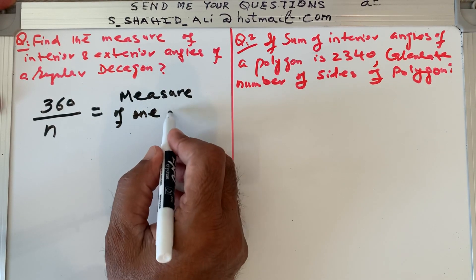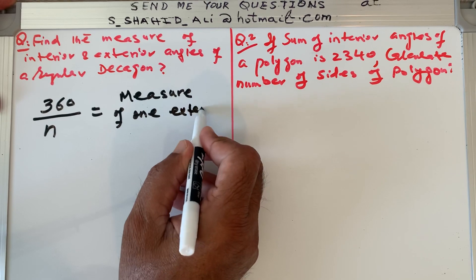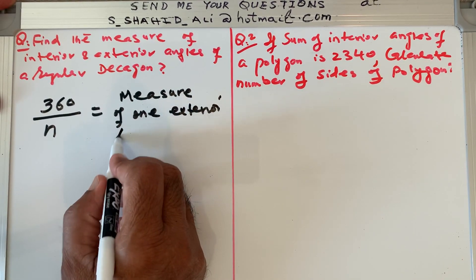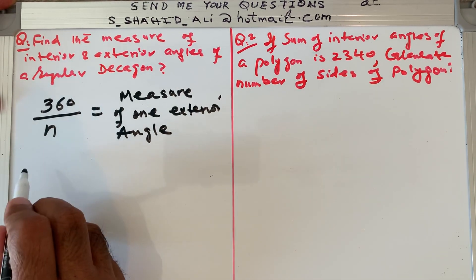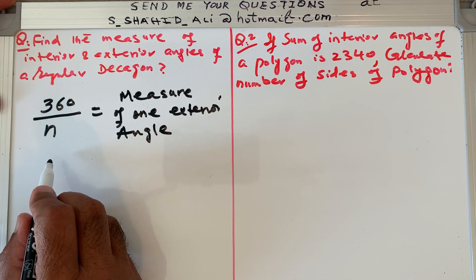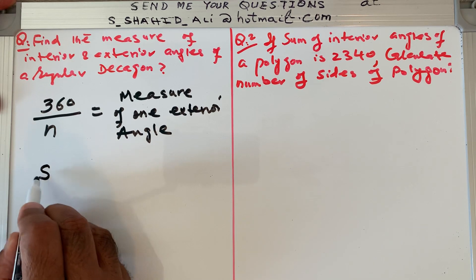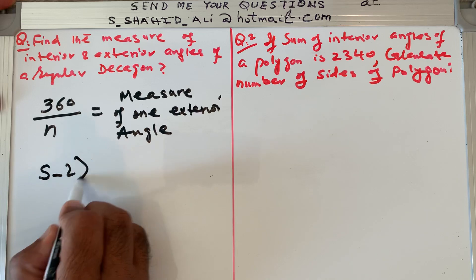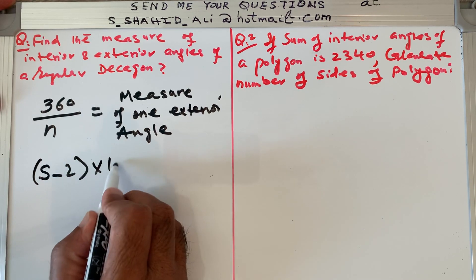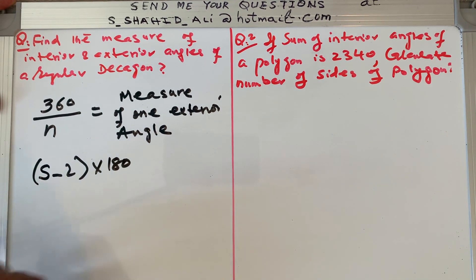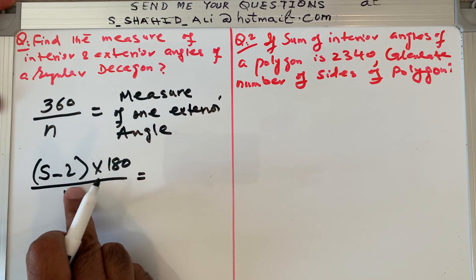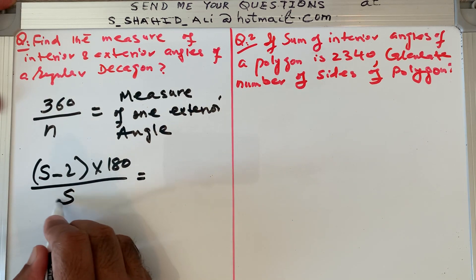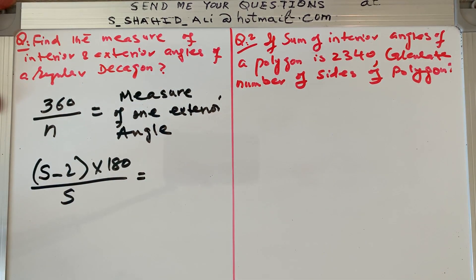We also need to find the interior angle. From the last video, the formula for one interior angle of a polygon is: (n minus 2) times 180, divided by n — or we can use s for the number of sides instead of n; it's the same thing.